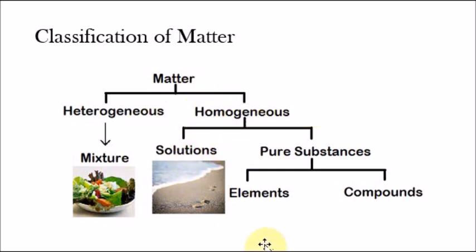Now there are two types of pure substances: elements and compounds. Pure substances are substances which consist of just one type of atom.